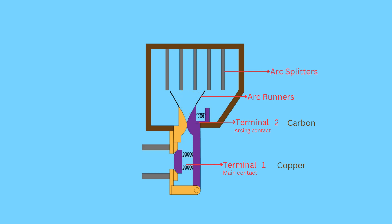Arc splitters are a series of metal plates attached in line. Arc chutes are spaces which carry the runner and splitter to quench the arc.